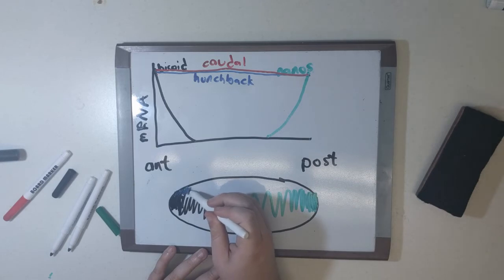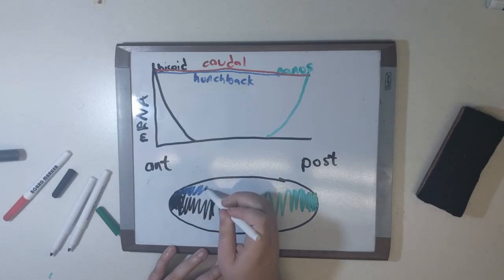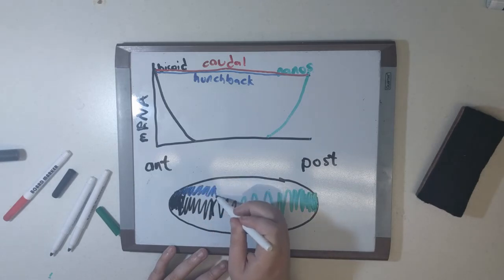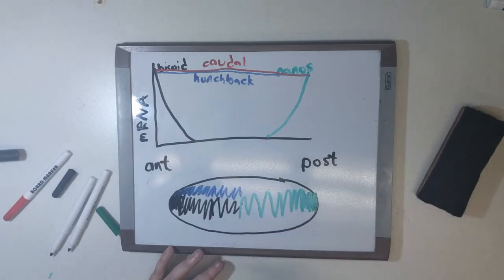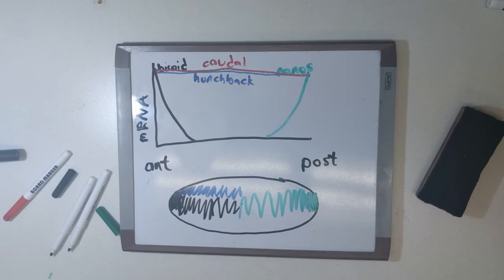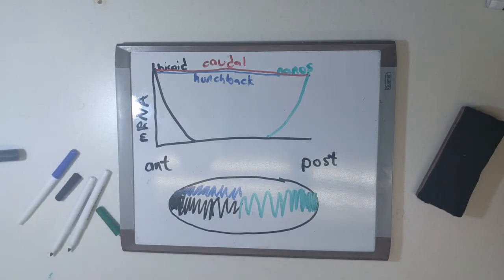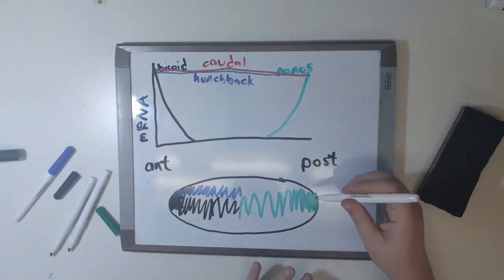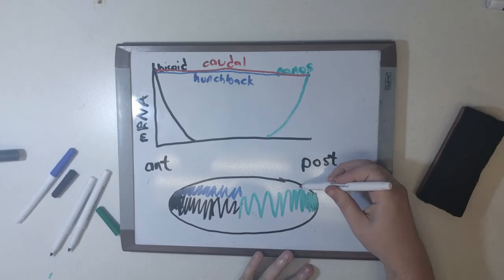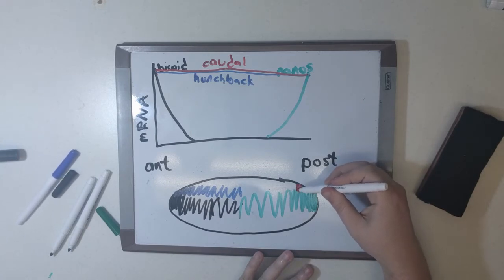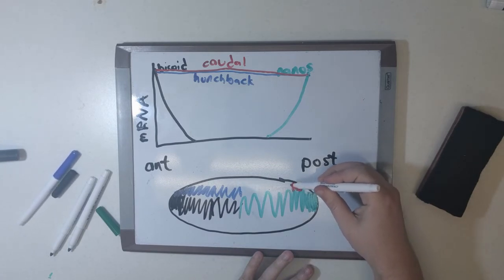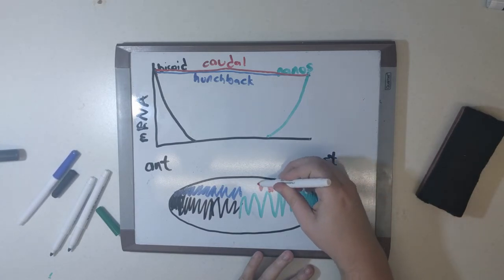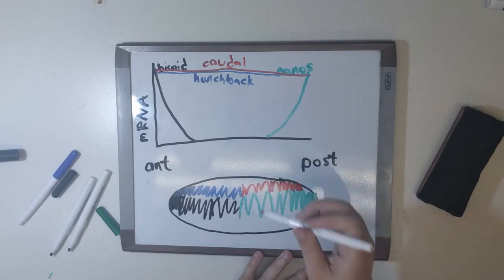Nanos, represented by the green marker, is really concentrated at the posterior end of the embryo and will diffuse into the middle as well. It is a translational repressor for Hunchback protein; therefore, Hunchback protein cannot be expressed in the posterior zone. Hunchback and Caudal both act as transcriptional activators for future developmental genes the fly will need.